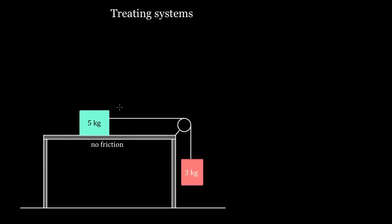Alright, this problem is a classic. You're gonna see this in basically every single physics textbook. And the problem is this: if you've got two masses tied together by a rope, and that rope passes over a pulley, what's the acceleration of the masses? In other words, what's the acceleration of the three kilogram mass, and what's the acceleration of the five kilogram mass?